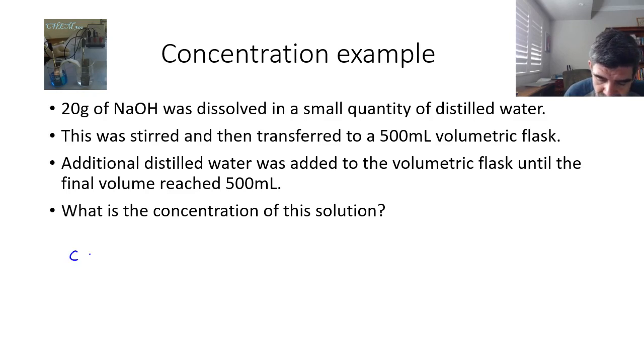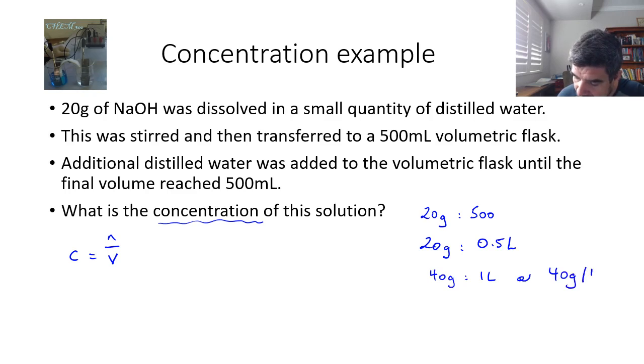Well, we know concentration is equal to number of moles over volume. And of course, one of the things that it doesn't actually say in this question is which units to use. So technically, you could say, well, there are 20 grams of our sodium hydroxide in 500 mL. That's equivalent to 20 grams in 0.5 liters, which would be the same as 40 grams in 1 liter or 40 grams per liter. So there's one type of unit that we can look at in terms of calculating a concentration.